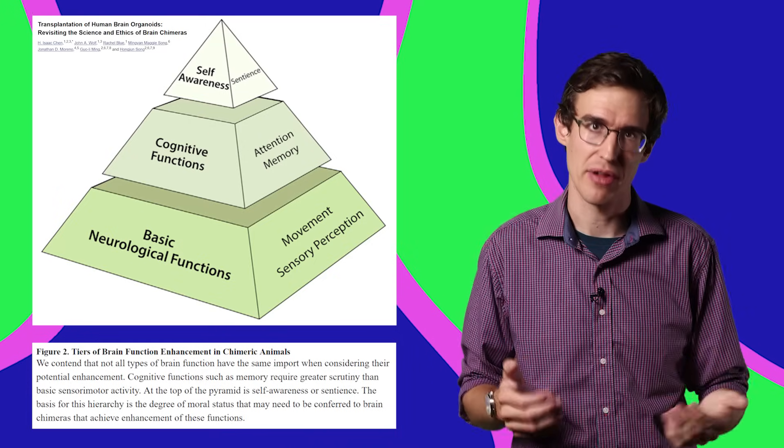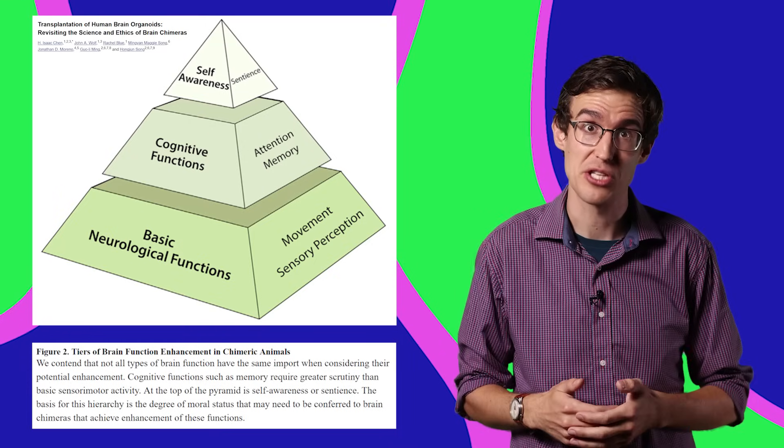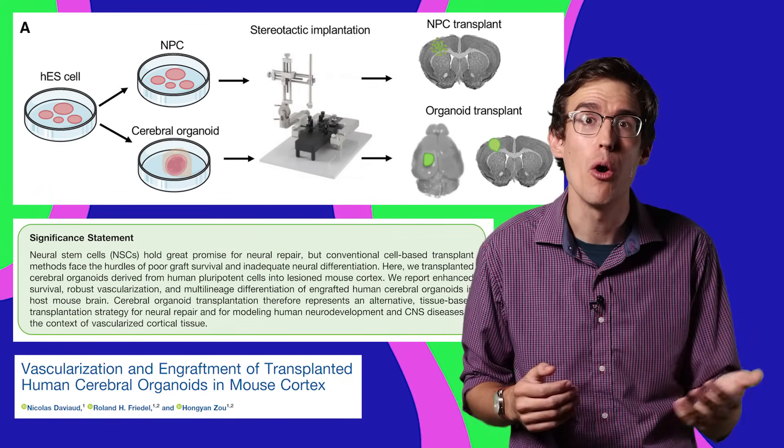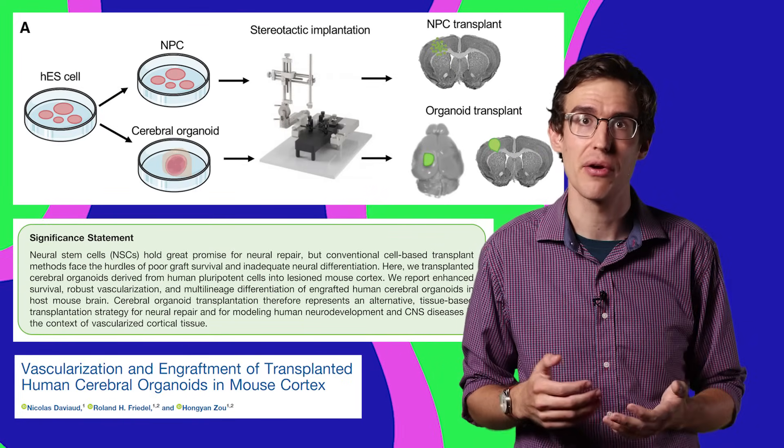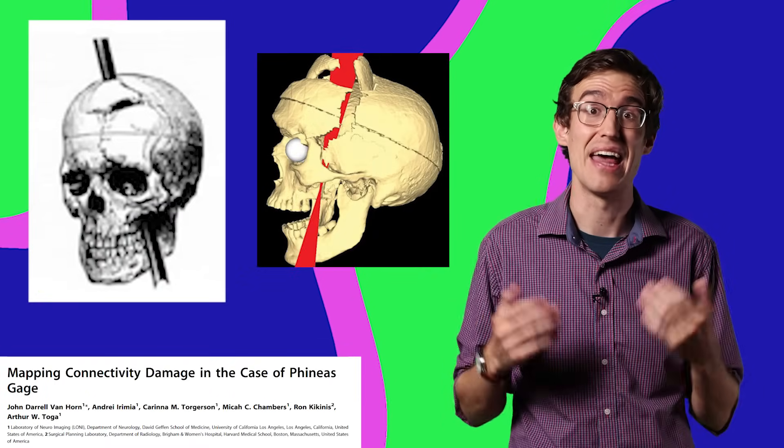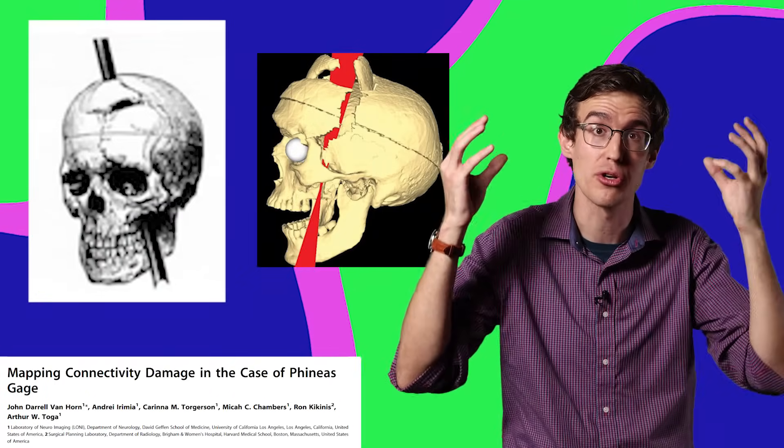We know the brain is really flexible. That's why these organoid transplants could be so useful. Imagine being able to make some of your own brain tissue to replace areas that were damaged by a stroke or getting a railroad spike through your head, and then it becomes integrated and restores brain function.